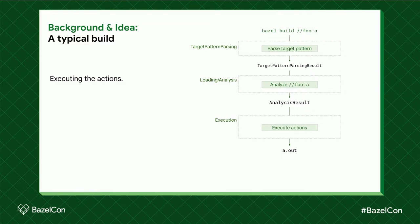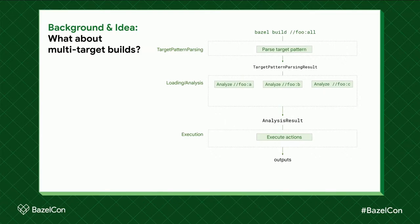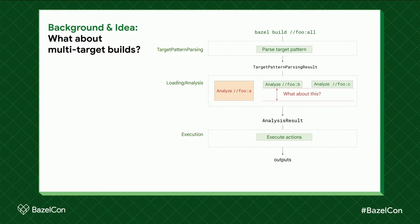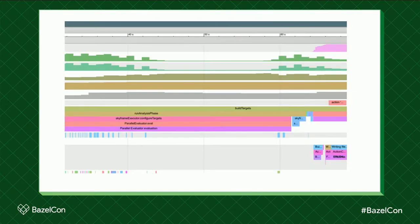What about multi-target builds? It's not that much different — just more of the same. During loading and analysis, instead of analyzing one target we analyze three; in this case because the package 'foo' has three targets: a, b, and c. Same for execution — we just execute more actions. But what if target a takes a lot longer than b and c to be analyzed? What do we do with the knowledge of b and c that's already available?